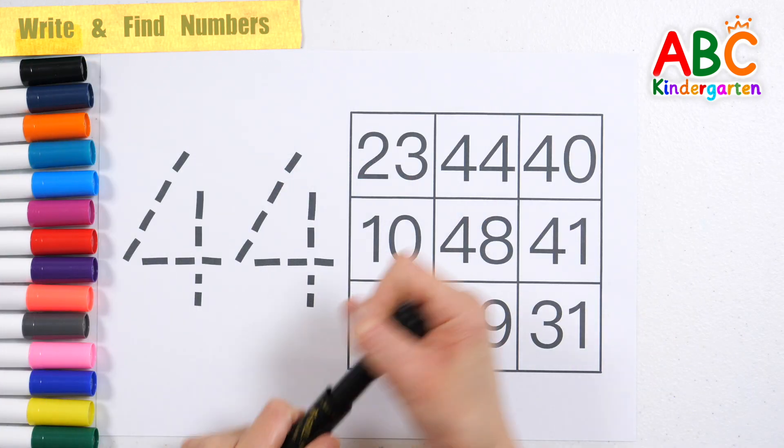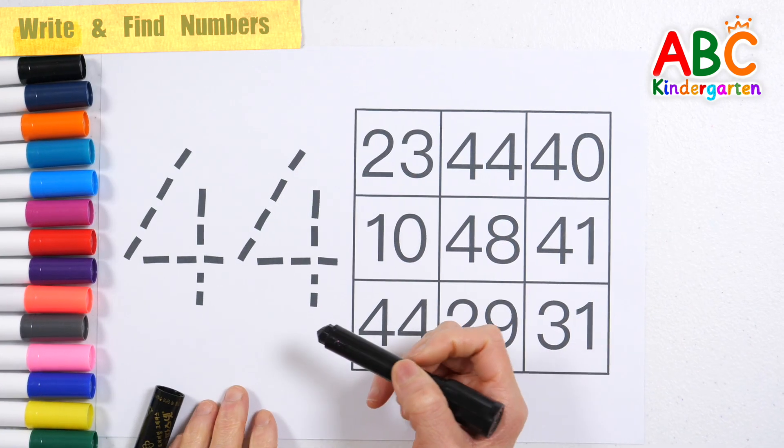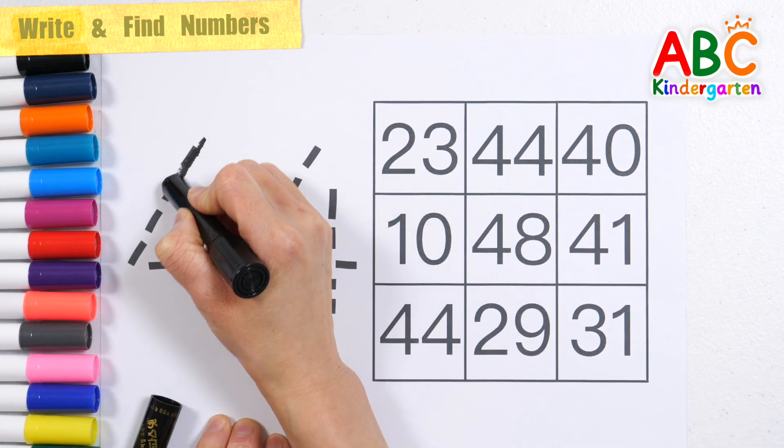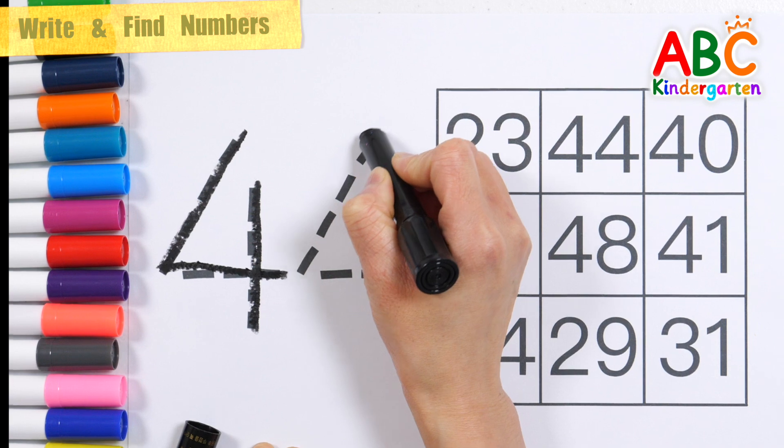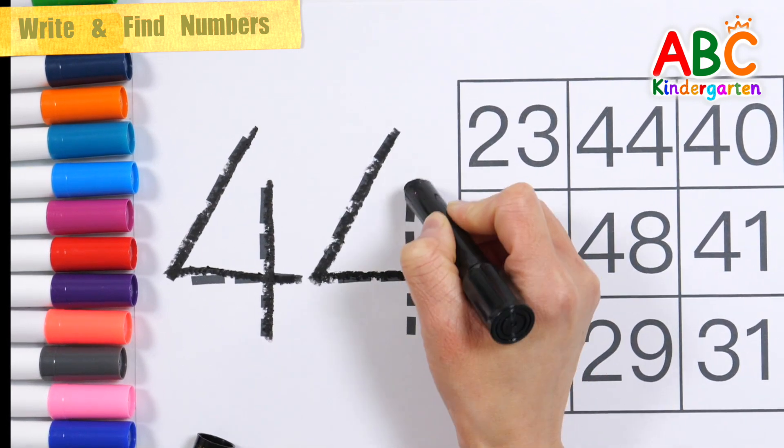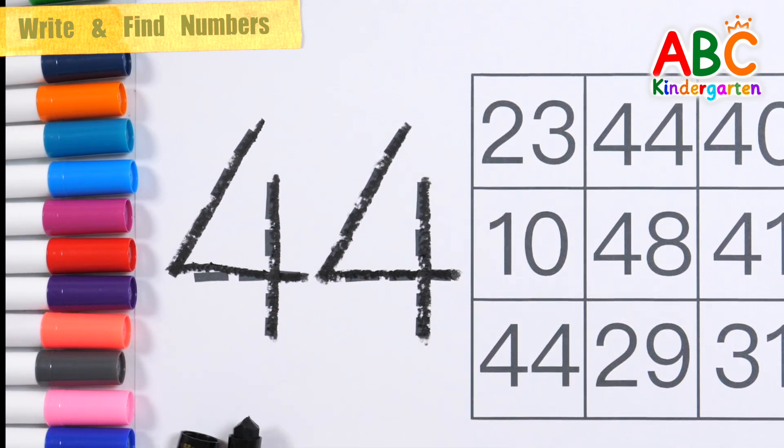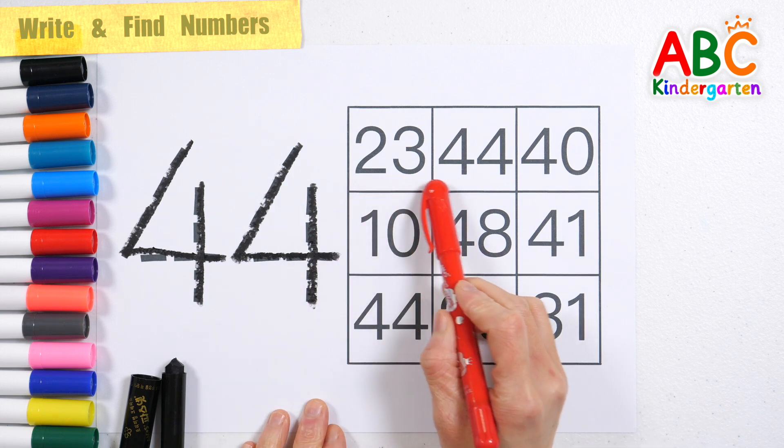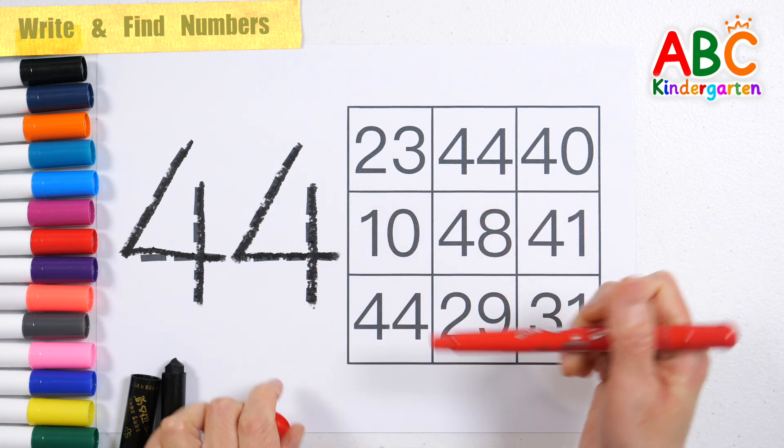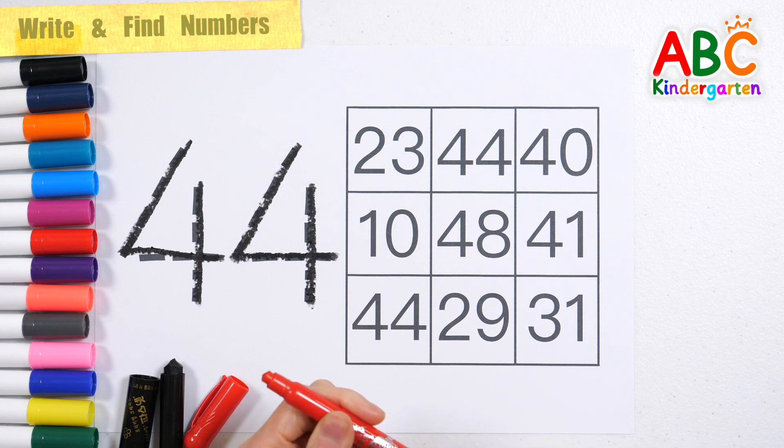Write the number on the left along the dotted line. 44. Find the same number on the right and circle it.